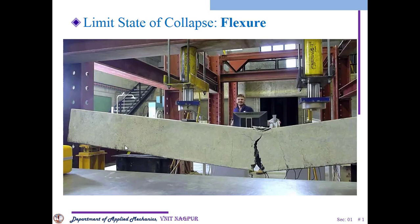Now the limit state of collapse in flexure works like this. As you can see in this diagrammatical representation — in this photograph — the universal testing machine is applying the load at certain distances, and that particular structure fails at a certain point where the plane is not parallel and not in the axial direction.